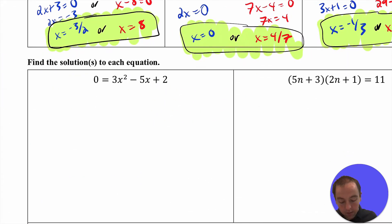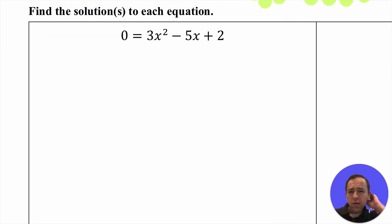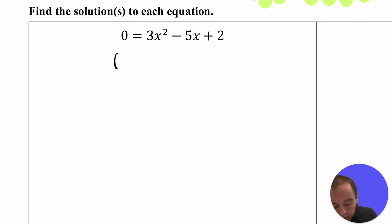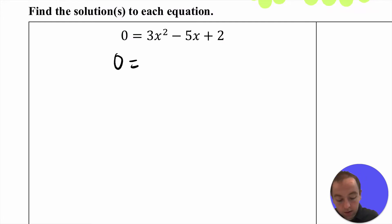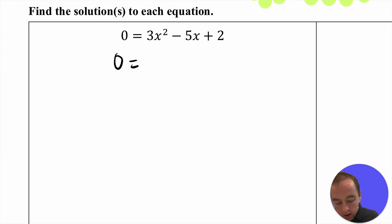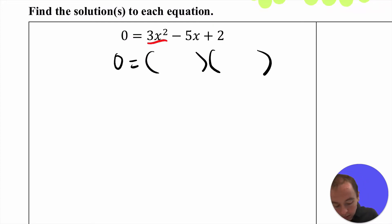Now jumping to more examples where we find solutions to each equation. We have a quadratic equation since the highest exponent on x is 2. We want to factor the expression so we can use the zero product property. First, check for a GCF — but 3, 5, and 2 are only divisible by 1 and don't all have variables, so there's no GCF. We try guess and check: 3x squared comes from 3x times x, and 2 comes from 2 times 1.